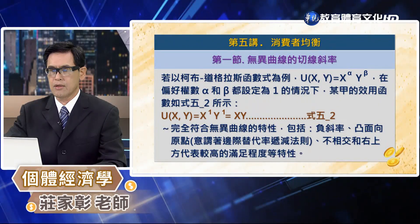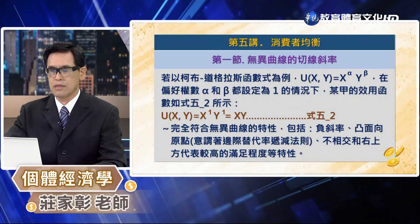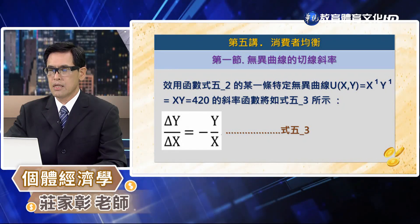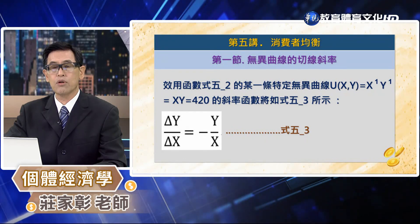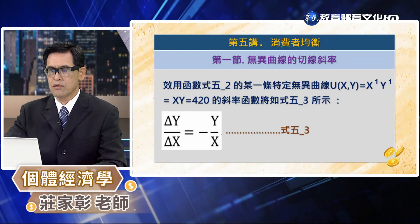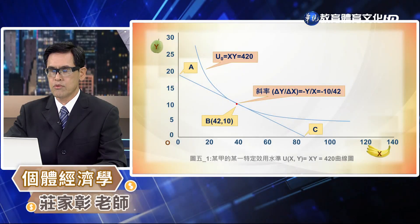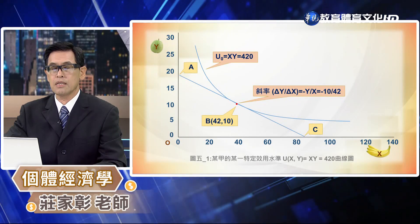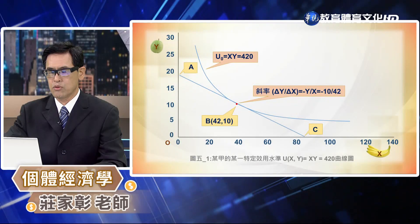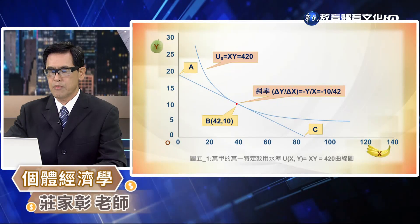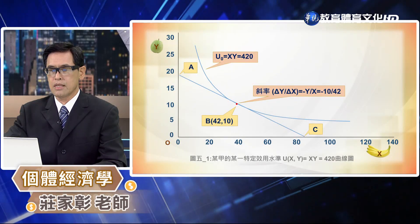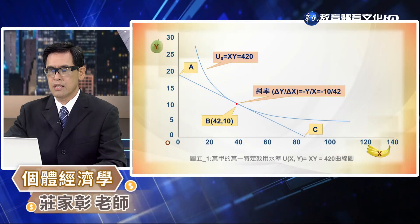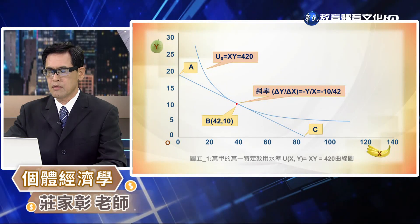公式4-5-2完全符合無差異曲線的特性，包括負斜率、凸面向原點、不相交，右上方的無異曲線代表比較高的效用等等特性。在這個函數情況下，我們來看一條特定的無異曲線 u(x,y) = x × y = 420 單位的函數，我們就可以把它畫在圖5-1。在圖5-1我們可以看到一條曲線代表 xy = 420 的效用函數，效用值就是420單位，以及在 b 點坐標 (42, 10) 的切線。